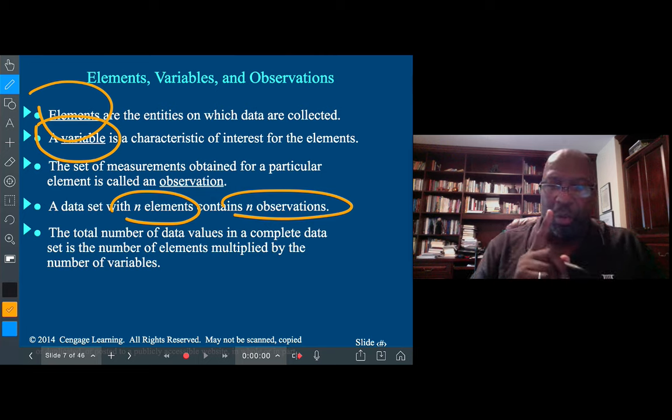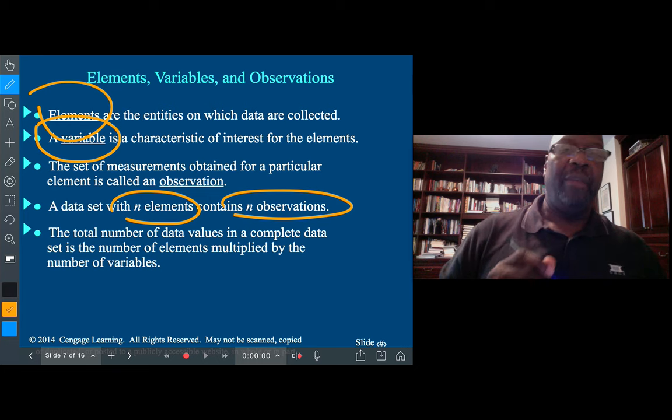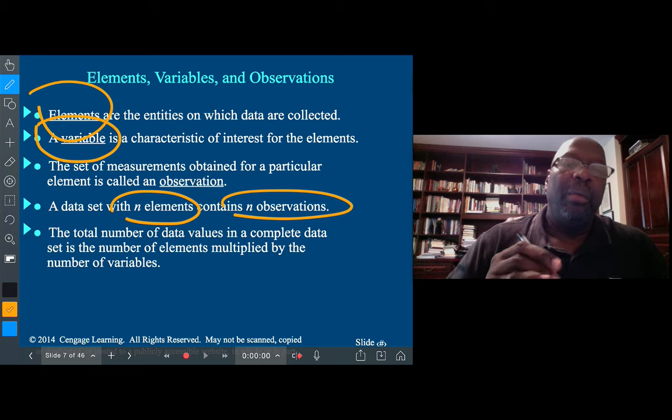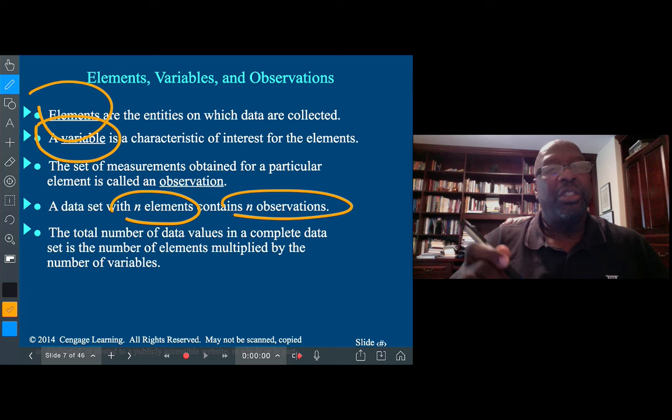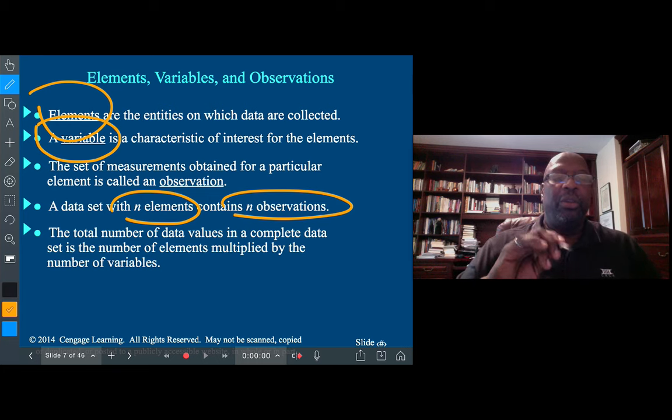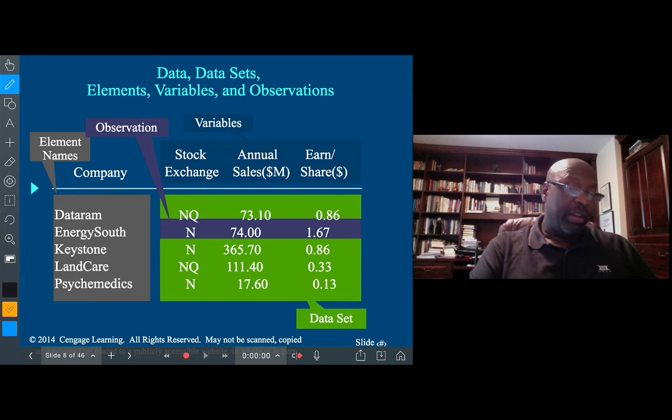The total number of data values in a complete data set is the number of elements multiplied by the number of variables. Sometimes we observe more than one variable per element. For example, with 15 cars, we could measure how long it takes from zero to 60 miles per hour, whether it's automatic versus standard, and the type of car model. If I collect that information, I now have three variables times 15 cars, so I would have 45 values in the data set. The number of elements is still 15.